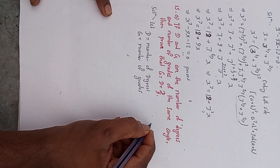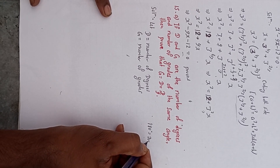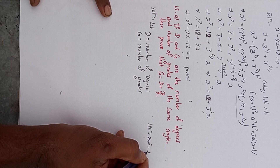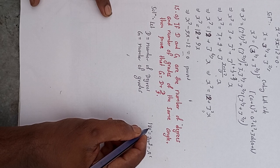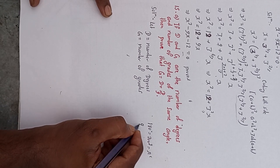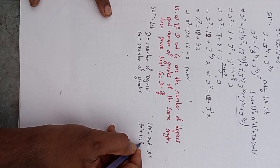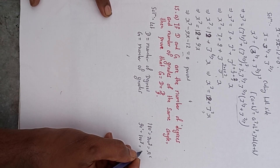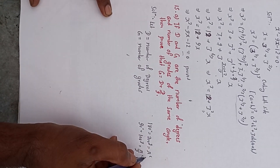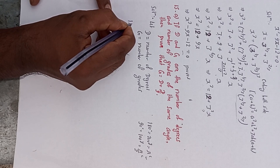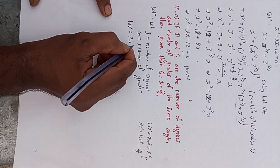You have to remember this relation: 180 degrees is equal to 200 grades is equal to pi radians. You can also remember that half of this gives 90 degrees equal to 100 grades equal to pi by 2 radians. So here, 180 degrees is equal to 200 grades.